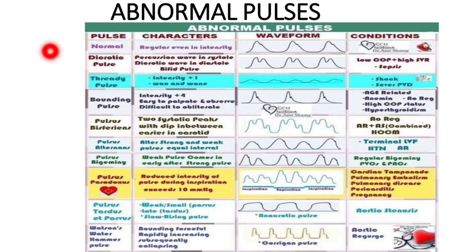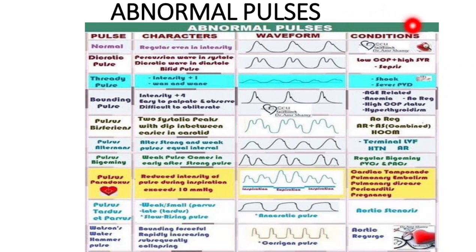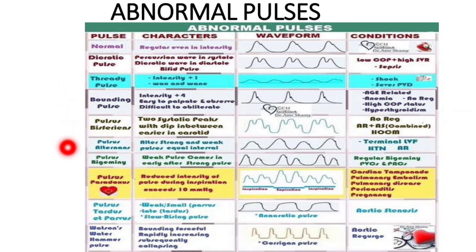Now coming to the last slide: abnormal pulses. In first year, it is wise to learn the names of the abnormal pulses and their characters in their respective waveforms. The conditions in which the abnormal pulses occur you can learn in the successive years. Here are some of the abnormal pulses: dicrotic pulse, thready pulse, pounding pulse, pulsus bisferiens, pulsus alternans, pulsus paradoxus, pulsus tardus, pulsus parvus, and water-hammer pulse. Take your time to read the character in the character column and correlate it with the waveform given in the waveform column, and also read the conditions.